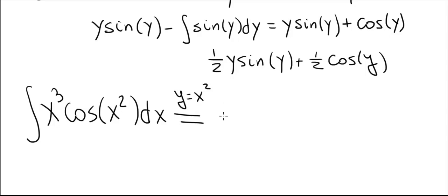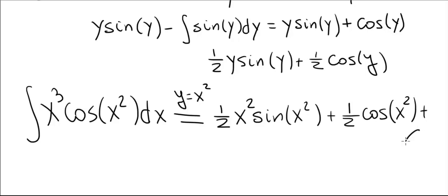And now our final answer in variable x is 1 half x squared times the sine of x squared plus 1 half cosine of x squared plus c.